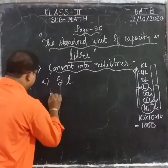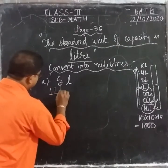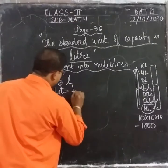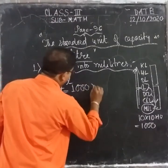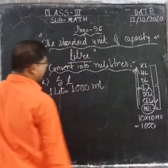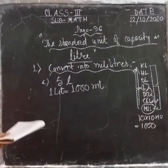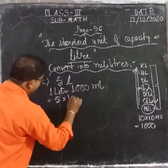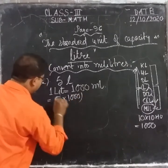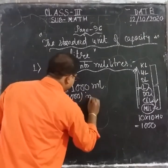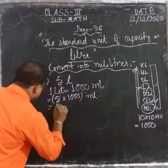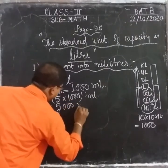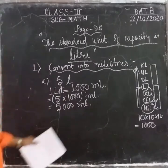So one liter equals one thousand milliliters. Now we have to convert 5 liters: 5 × 1000 = five thousand milliliters. This is the way you have to solve.